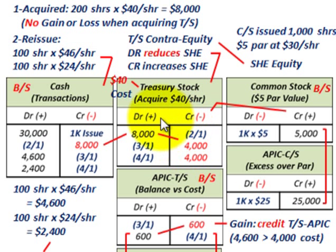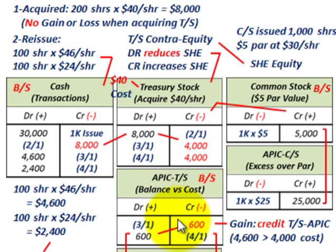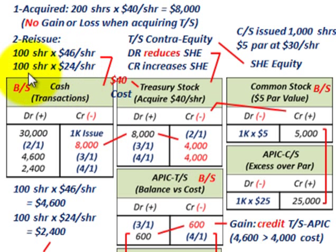With the cost method, you maintain your treasury stock account at the acquired cost of that stock. When you issue it, any amounts either under or over go into the additional paid-in capital account. We looked at the first case where we issued the first 100 shares. Now let's issue the next 100 shares.